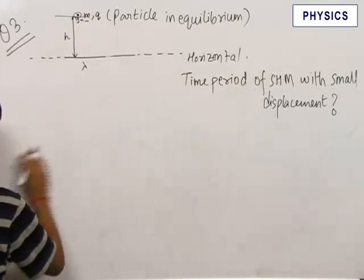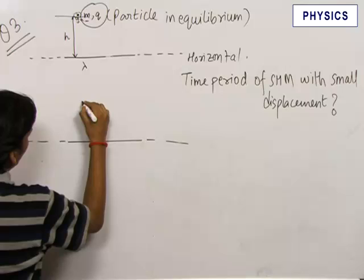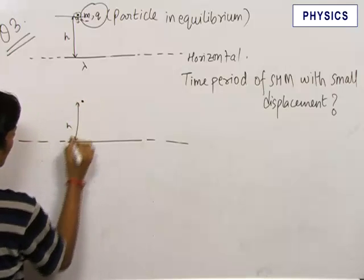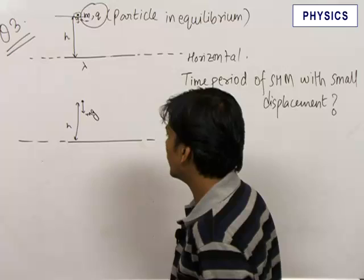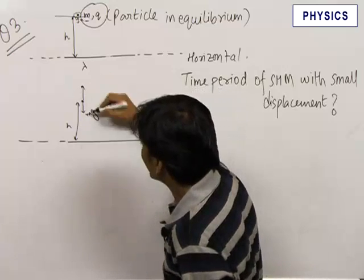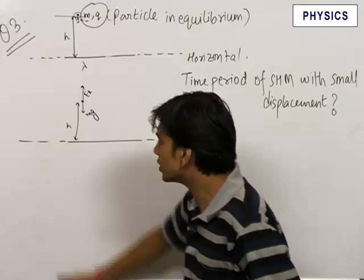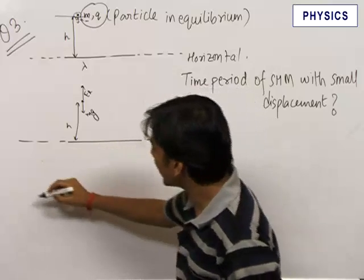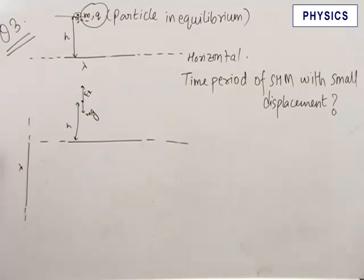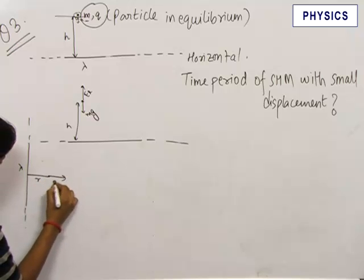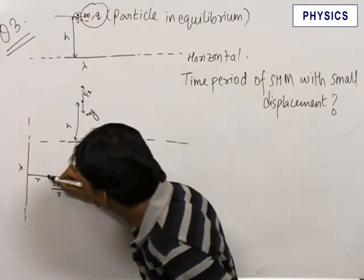Let us first see why this particle is in equilibrium. The particle at a height h above the wire experiences a force in the downward direction equal to mg. So it must experience a force in the upward direction due to the wire, which is the electrostatic force balancing mg. The electric field for an infinite wire of linear charge density lambda is 2k lambda upon r, perpendicular to the wire at a distance r.